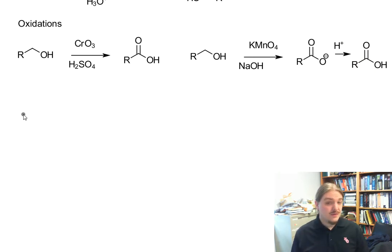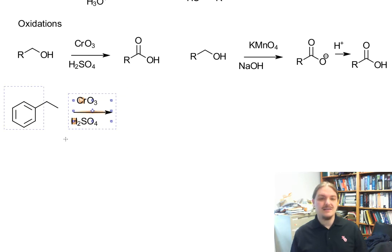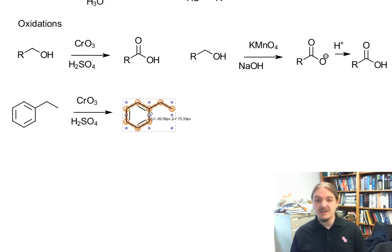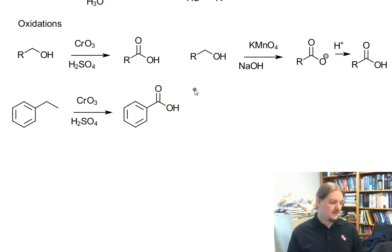So oxidation works. There are other functional groups that can be oxidized. For example, alkyl side chains on benzene can be oxidized. Again, both of these methods work. Both chromic acid and basic potassium permanganate will oxidize alkyl benzenes to benzoic acid. And that oxidation chews off some carbons if they're there.